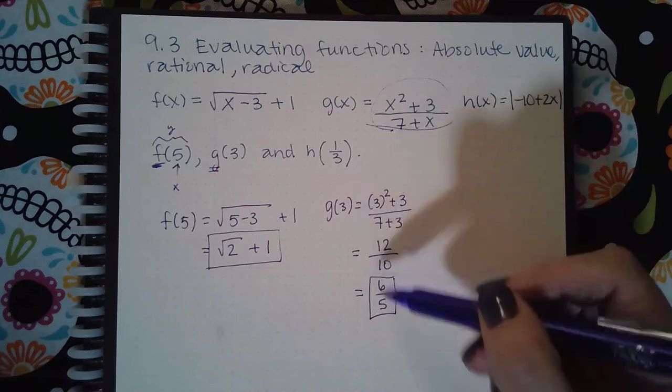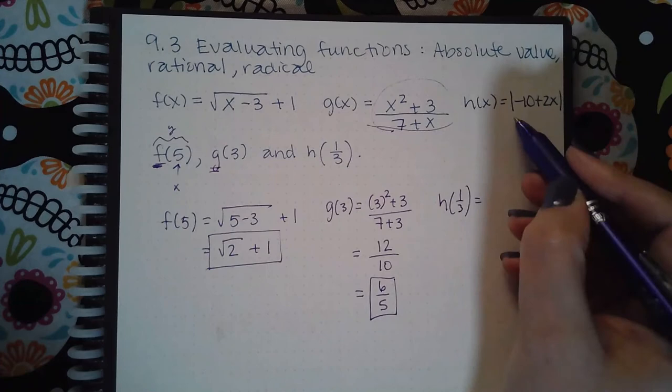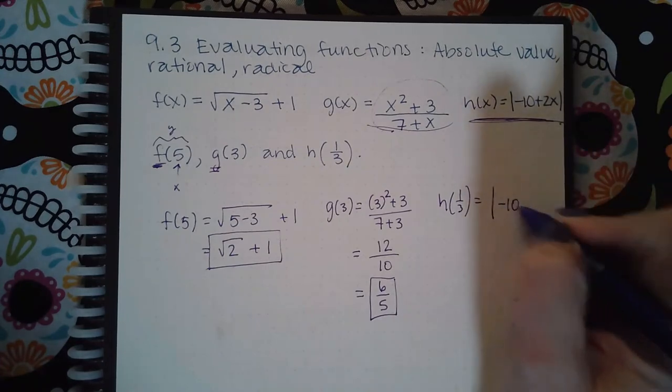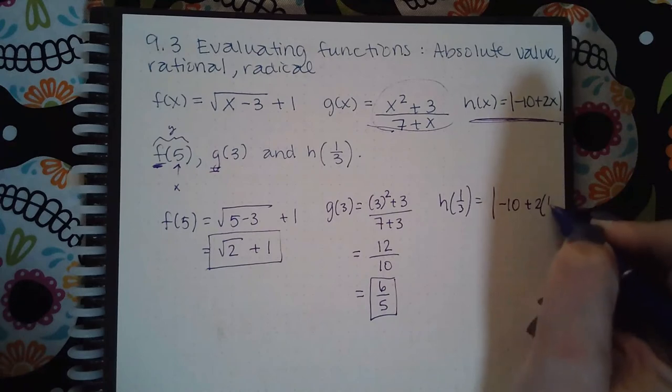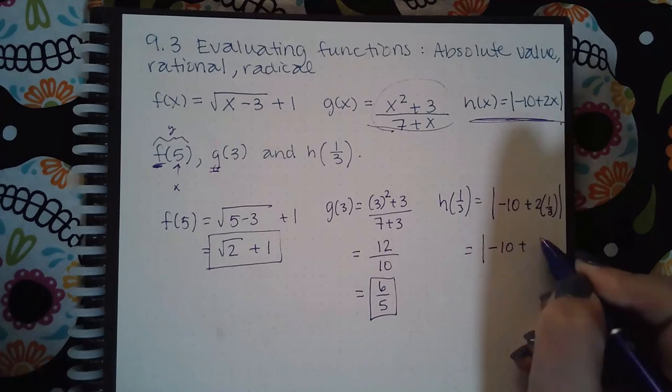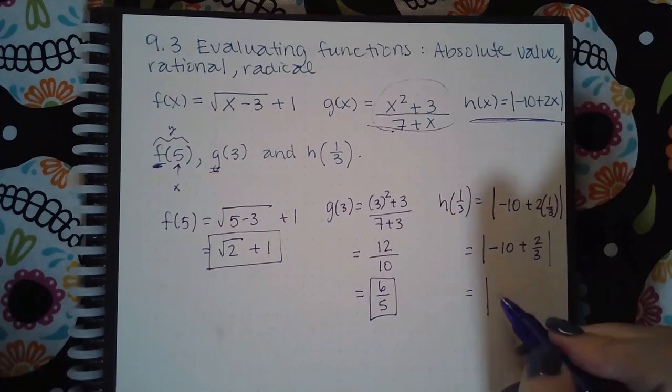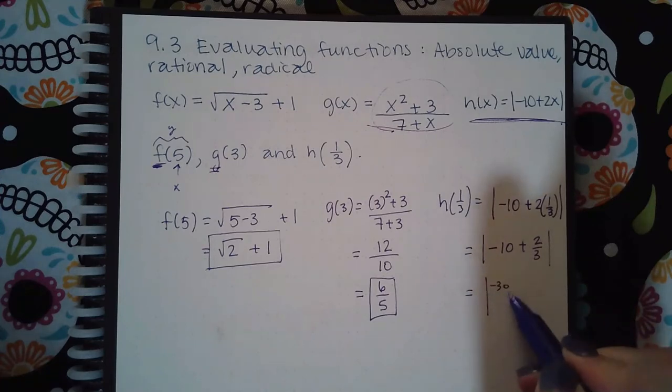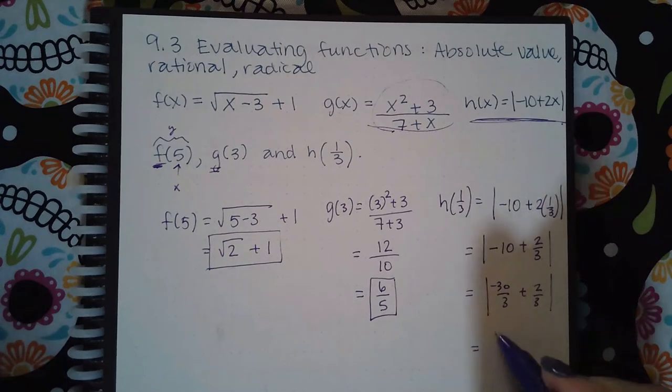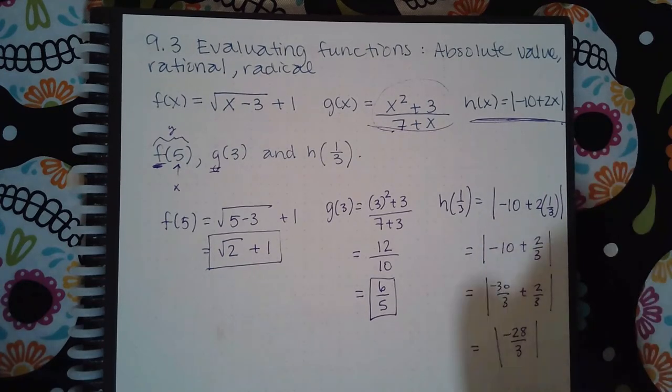For h of 1/3, we're going to take the h function and plug in 1/3 for x. Then I get the absolute value of negative 10 plus 2/3, which is negative 30 over 3 plus 2 over 3 if I get a common denominator. So then I get negative 28 over 3, and the absolute value of a negative is a positive, so we get positive 28 over 3.